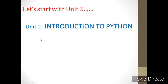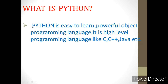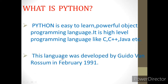First of all, you should know what Python is. Python is not a reptile, not the snake you were thinking of. Here in the world of computers, Python is a programming language. It is an easy to learn, powerful object-oriented programming language. It is a high-level programming language like C, C++, Java, etc. Through Python, we create and develop programs using object-oriented programming. Python language was developed by Guido van Rossum in February 1991.